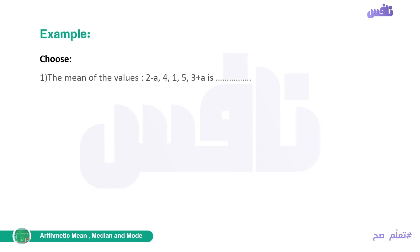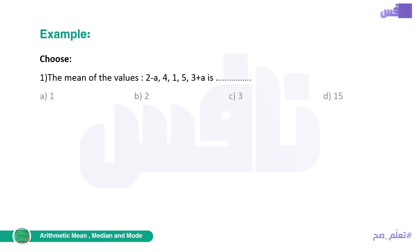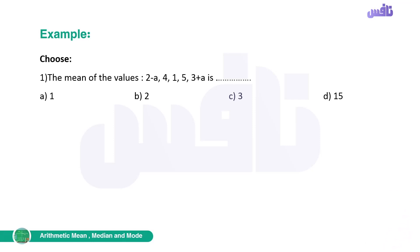Another example — complete: the mean of the values 2−a, 4, 1, 5, 3+a. We have choices as we can see. To find the mean, we take the sum of these values over the number of these values.